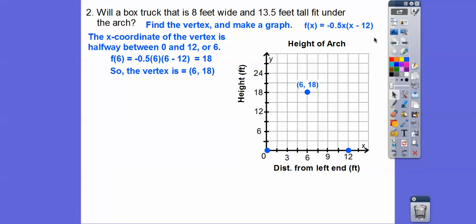And then we go over 1, it goes down a half of 1². Over 2, down a half of 2². I went over 3 and then down a half of 3². 3² is 9 and then a half of that is 4.5, just gives me a better shape of my parabola. And then so there's the parabola right there, the upside down parabola. Now let's go back up here. Will a box truck that is 8 feet wide and 13.5 feet tall fit underneath that?